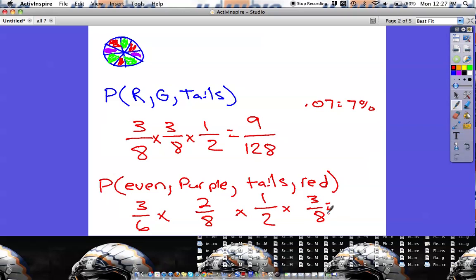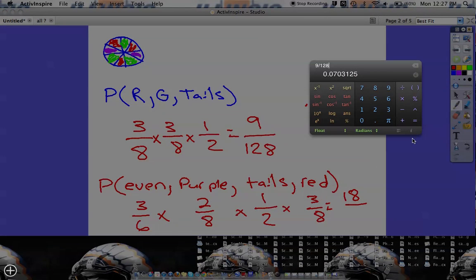So now we just need to multiply straight across. Three times two is six, times one is still six. Six times three is eighteen. And if we multiply the bottom, I know eight times eight is sixty-four. Sixty-four times two is one twenty-eight. And one twenty-eight times six is going to be seven sixty-eight.